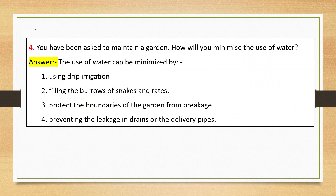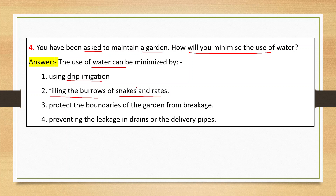Next question: you have been asked to maintain a garden — how will you minimize the use of water? The use of water can be minimized by using drip irrigation and by filling the burrows of snakes and rats so that water does not get wasted through them.